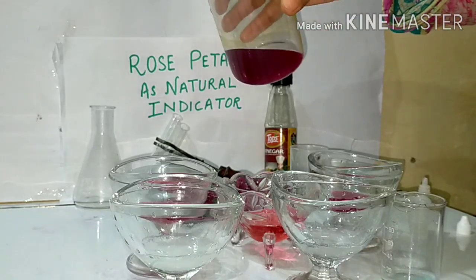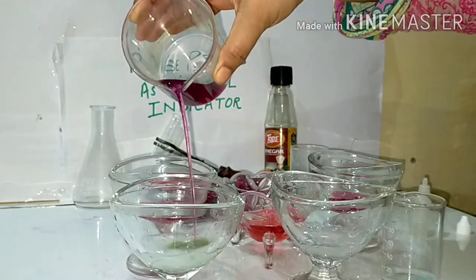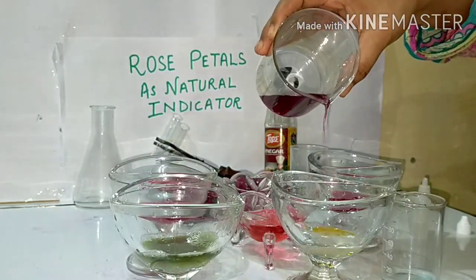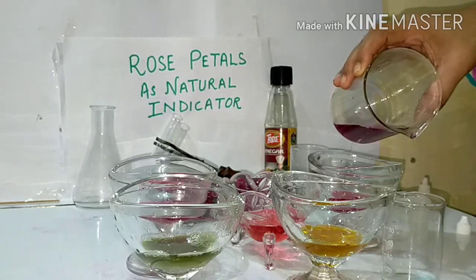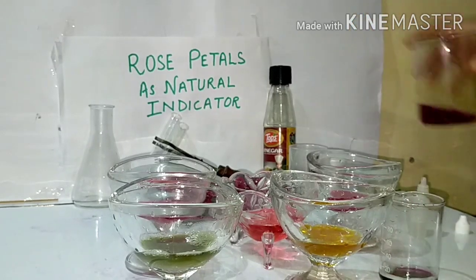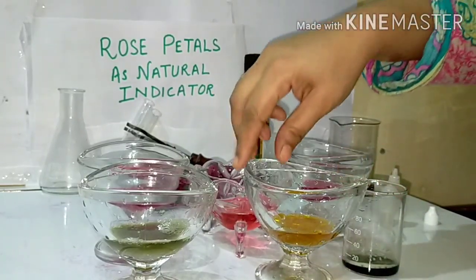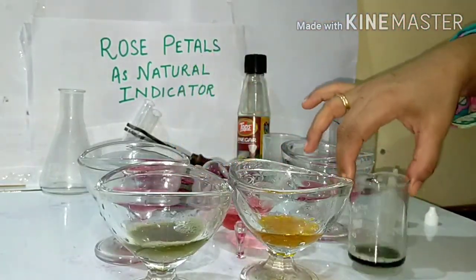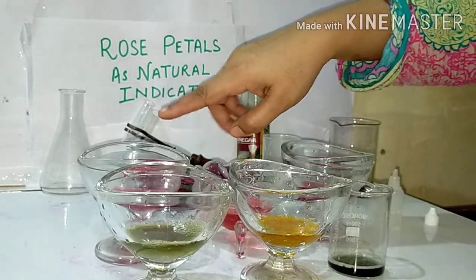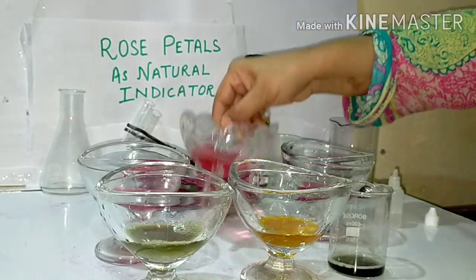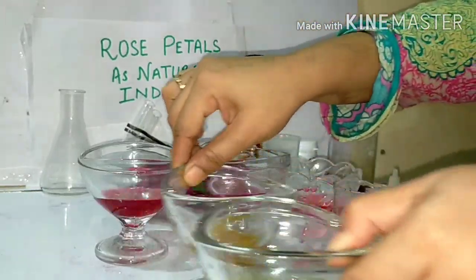Now one by one I will pour rose petal juice — you can observe the color change. You can see the color changes from yellow to light green and dark green. So in acid the color changes from red to pink.